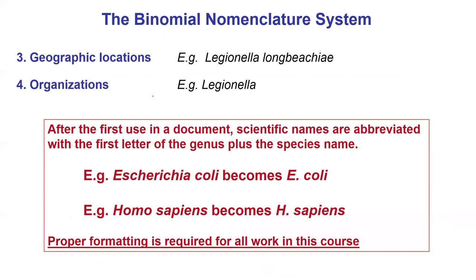So this is kind of a key thing to remember: use this properly in your lab reports. Remember that it's in italics, or it's underlined if it's handwritten. Generally, the first time you write the name in a report, you're going to use the full name — so, for example, Escherichia coli or Homo sapiens. And then after that, usually you're going to use the abbreviation: the genus with a capital first letter. So Escherichia becomes E., then a period because it's an abbreviation — it becomes E. coli. Homo sapiens becomes H. sapiens, and so on. You will lose marks if you do not do it properly in your lab reports.